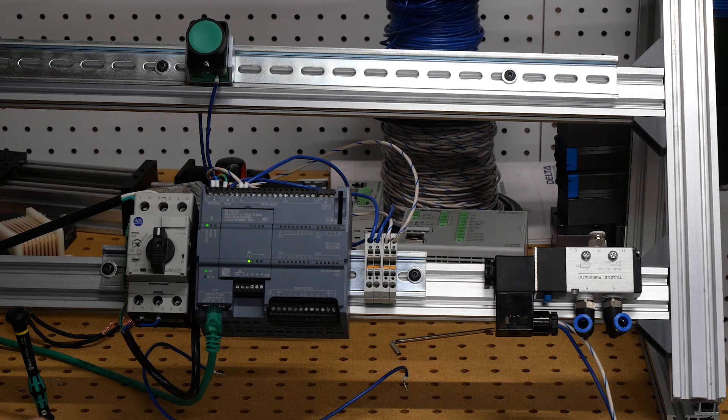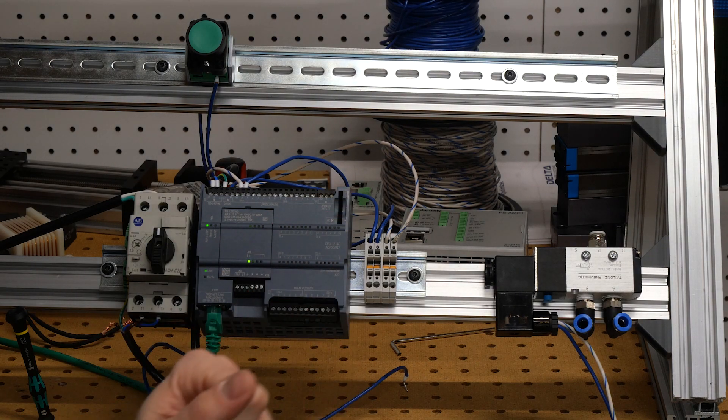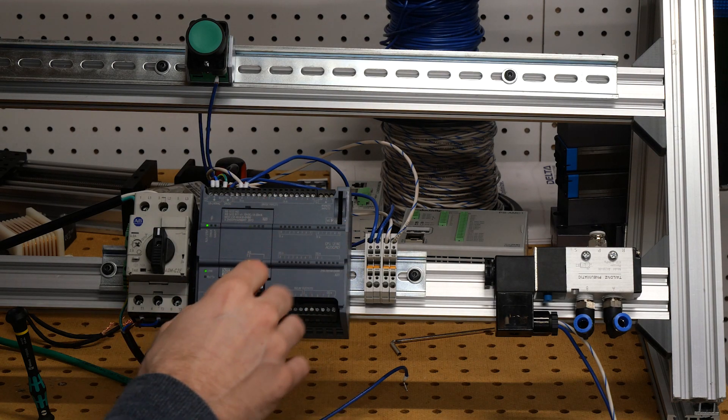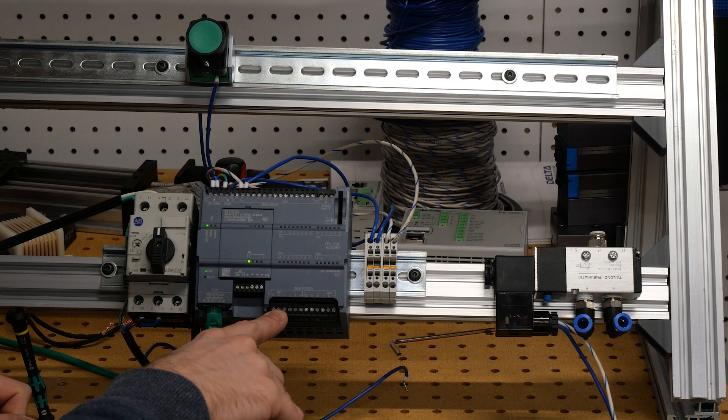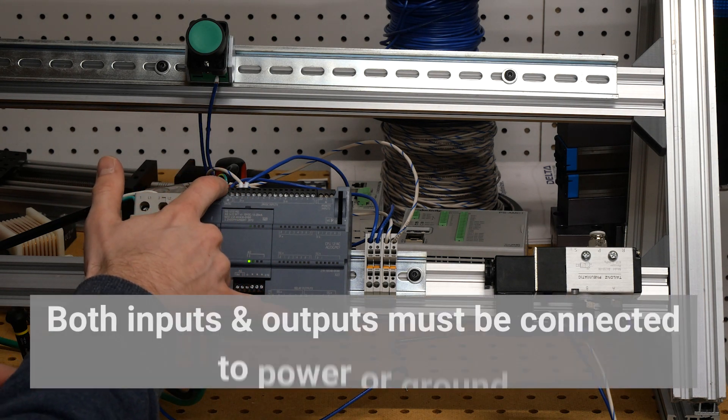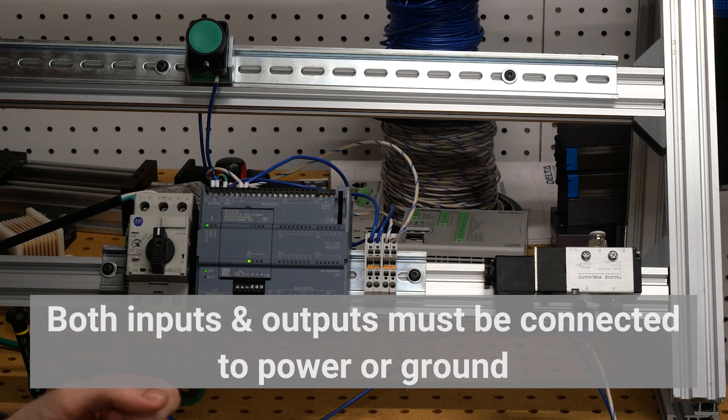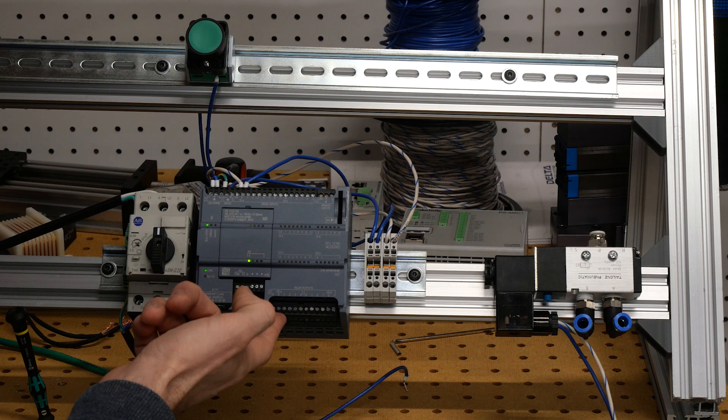To demonstrate this test on the Siemens PLC, we have one extra wiring connection that we need to make. Remember in the Allen-Bradley, the internal connection to the field power supply allowed both the inputs and the outputs to be either supplied with power or connected to ground.